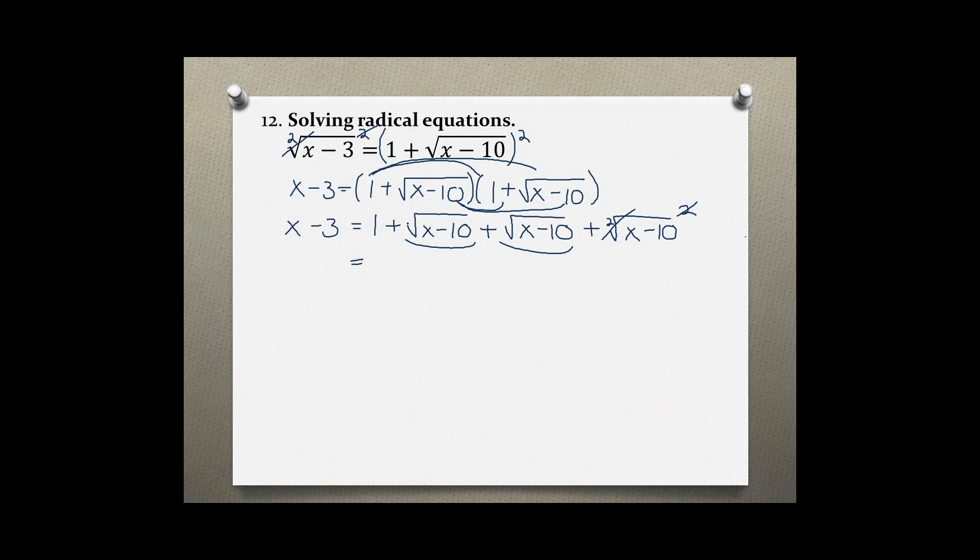Let me rewrite this. I can combine these two terms—they are like terms when the radicands are the same. I just add the coefficients in front. In this case, I have an imaginary 1 and an imaginary 1, so now I get 1 + 1, which is 2√(x-10), and then x - 10. I'm going to bring my right side down. Now I still have a radical in this problem, so I'm going to isolate that radical so I can use the power rule again.